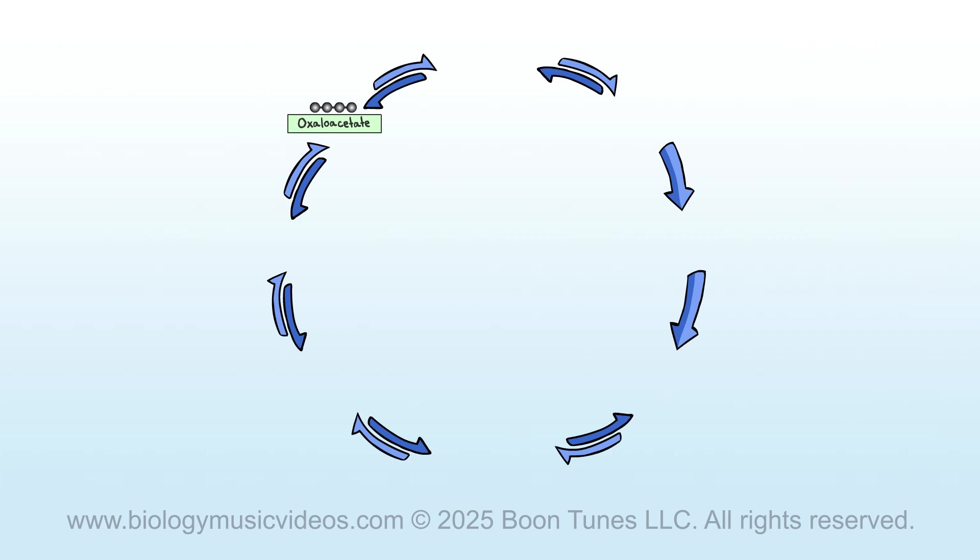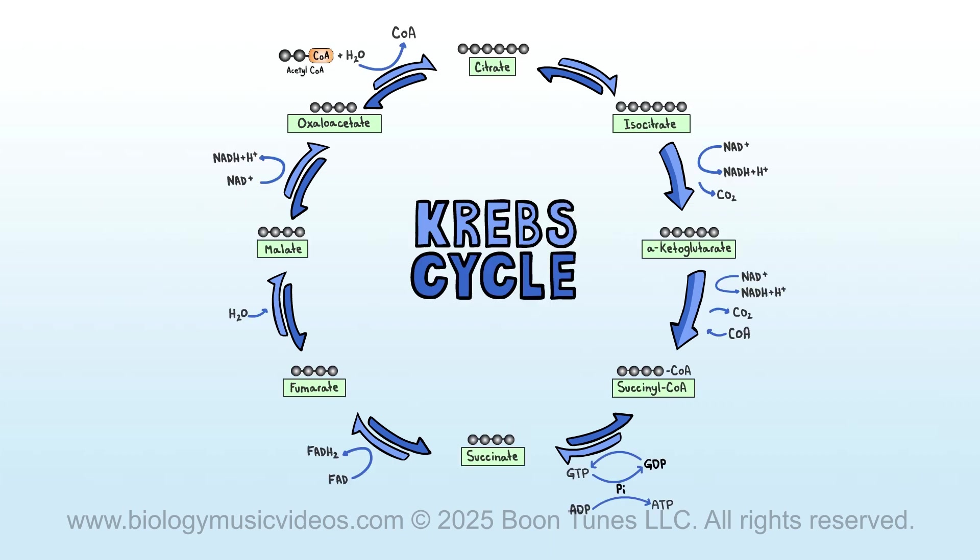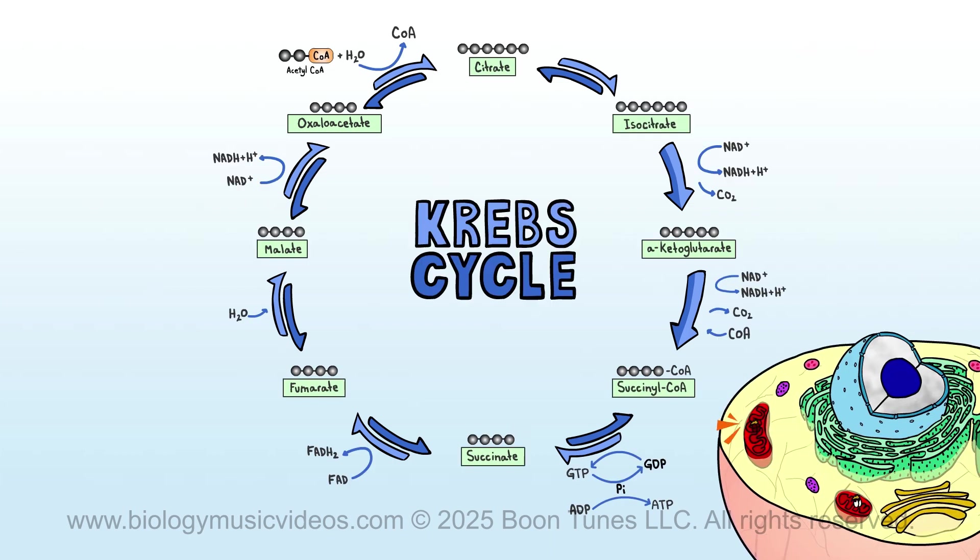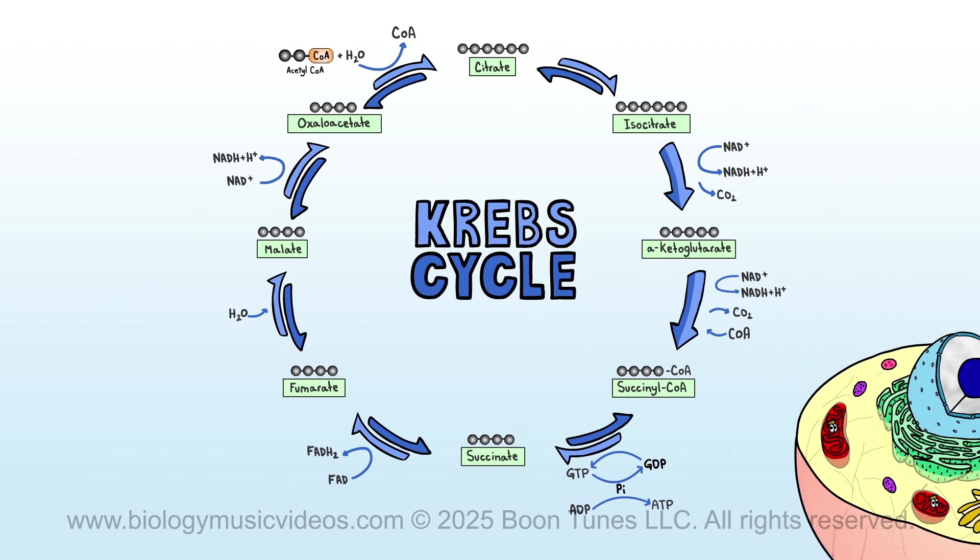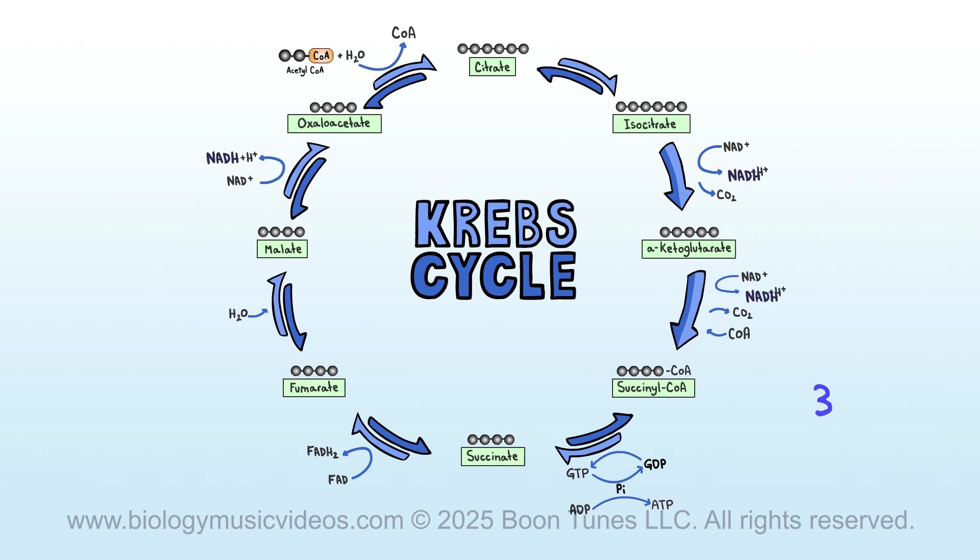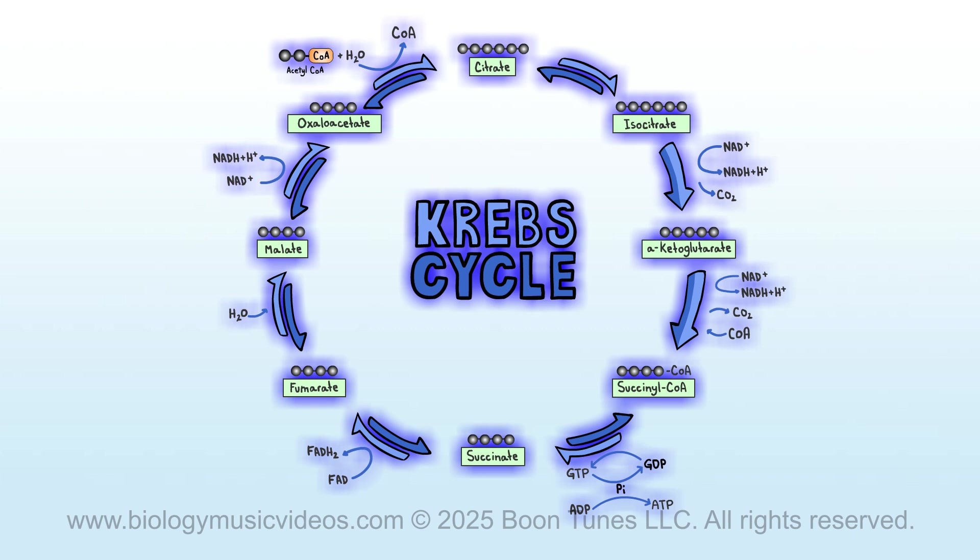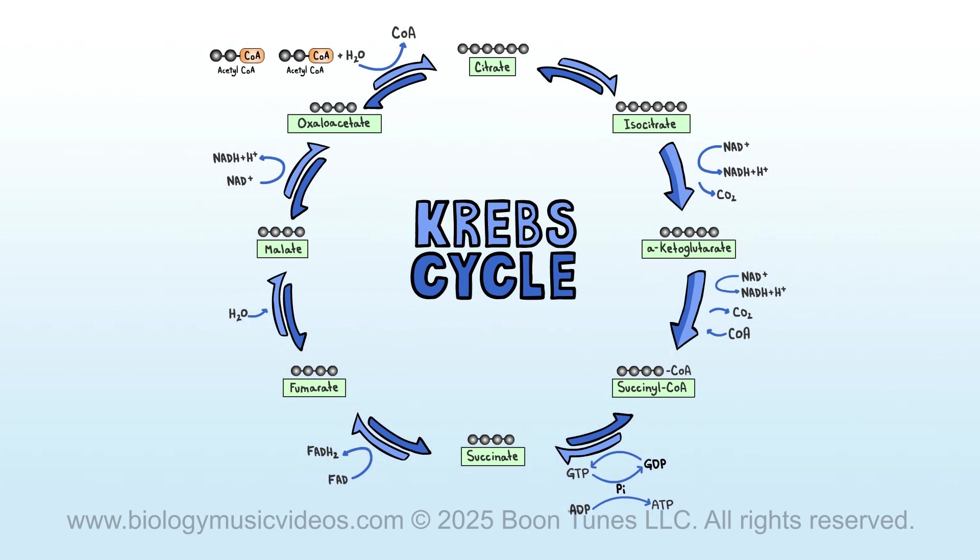We're back to where we started from, and the Krebs cycle is now done. The cycle's over, so let's review the products that it gave rise to. Each turn of the cycle generates three molecules of NADH, one GTP, one FADH2, and two molecules of CO2. We do all of this work, indeed, for each acetyl-CoA we receive. Two come our way when one glucose breaks down, so the cycle turns twice, round and round.